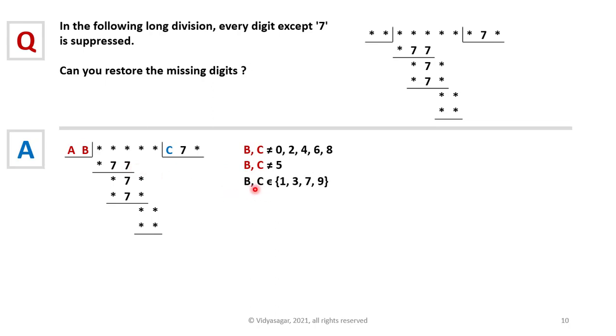Now this implies B and C must be from among 1, 3, 7, 9. From among these numbers, only these combinations after multiplication would get 7 at the end. So B and C can be any one of these options.